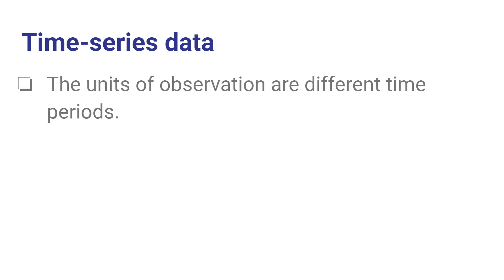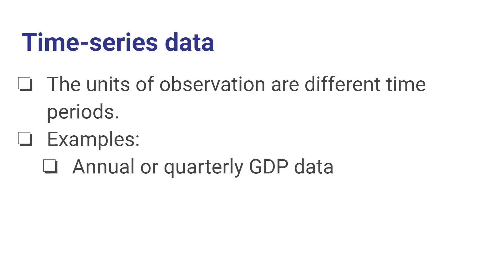Time series data consists of units of observations that are measured at different time periods. If we're measuring the units at different years, quarters, months, or days, then we're dealing with time series data. Examples of that might include any of the national income account data collected by the Department of Commerce — data on GDP, consumption, investment spending, government spending, and so forth — reported on an annual or quarterly basis, where each observation represents a different time period.